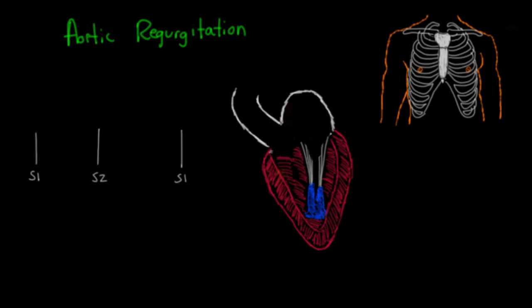For aortic regurgitation, auscultation location is a little counterintuitive. You might think to listen at the aortic area, but because the blood is coming back in the other direction, we actually listen along the left sternal border — meaning on the left side of the sternum. The reason is that the blood is flowing the other way, so why would you listen in the normal aortic area?